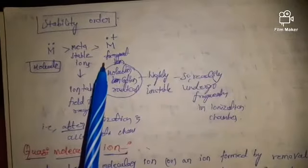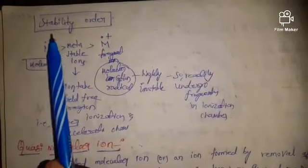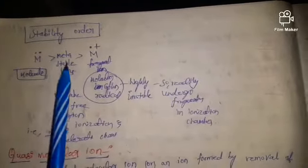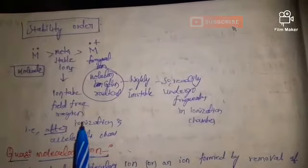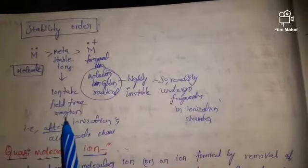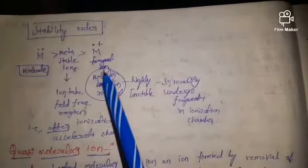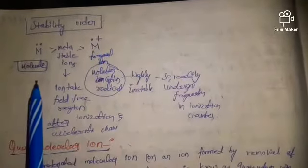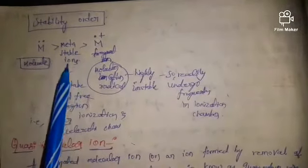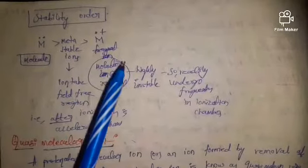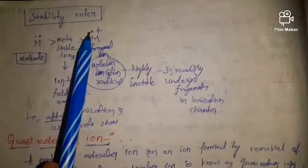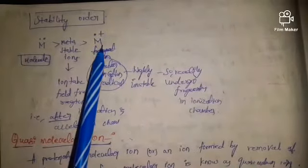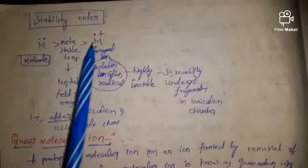This is the stability order, and this is most important — try to remember this. The normal molecule is highly stable. Next are metastable ions, which form in the ion tube field-free region. Next is the radical cation. As the radical is highly unstable, the molecular ion or radical cation readily undergoes fragmentation in the ionization chamber.